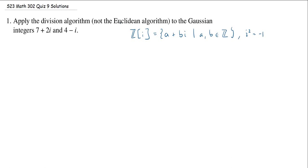We've shown this actually forms a unique factorization domain, meaning we can uniquely factor things into what you might call primes. And along the way to get there, we had to show that we had things like the division algorithm and the Euclidean algorithm, Bezout's lemma, Euclid's lemma, et cetera. And so in this problem, we're just going to use the division algorithm.